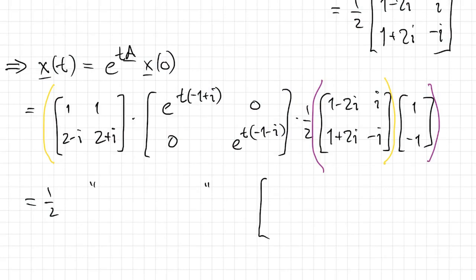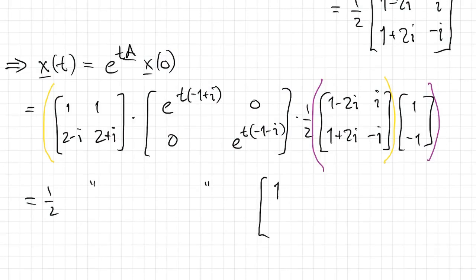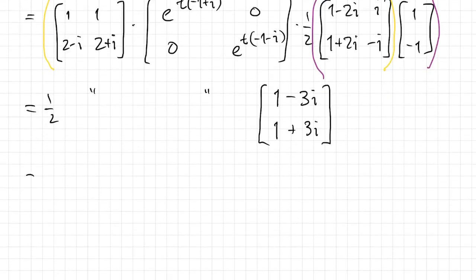I get 1 minus 2i minus i. And I get 1 plus 2i plus i. Alright, and I'm going to continue working from right to left. So now I'll do this matrix times the vector.